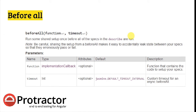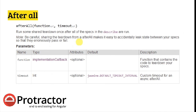beforeAll defines a function and timeout — inside it you put the pre-setup you want to execute before starting test execution. It runs some shared setup once before all specifications in the describe are run, so the code inside beforeAll is executed at the very beginning before any test cases. afterAll is used to perform cleanup activity — once your test execution is completed, if you want to close the browser or do any other cleanup, you use afterAll, and whatever is inside it runs at the very end.